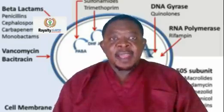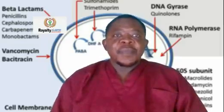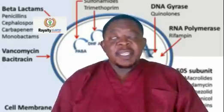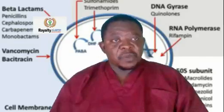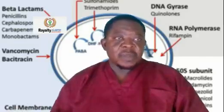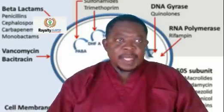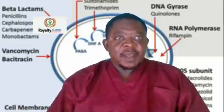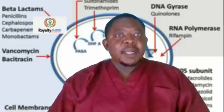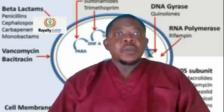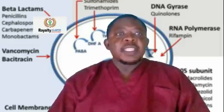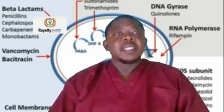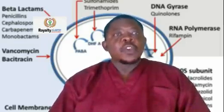Tetracyclines interfere with the transfer RNA binding to the ribosome so that the protein the bacteria will need to reproduce or repair worn-out tissue will not be produced. Preventing the binding of transfer RNA to the bacterial ribosome effectively prevents proteins being produced by the bacteria, leading to cell death.